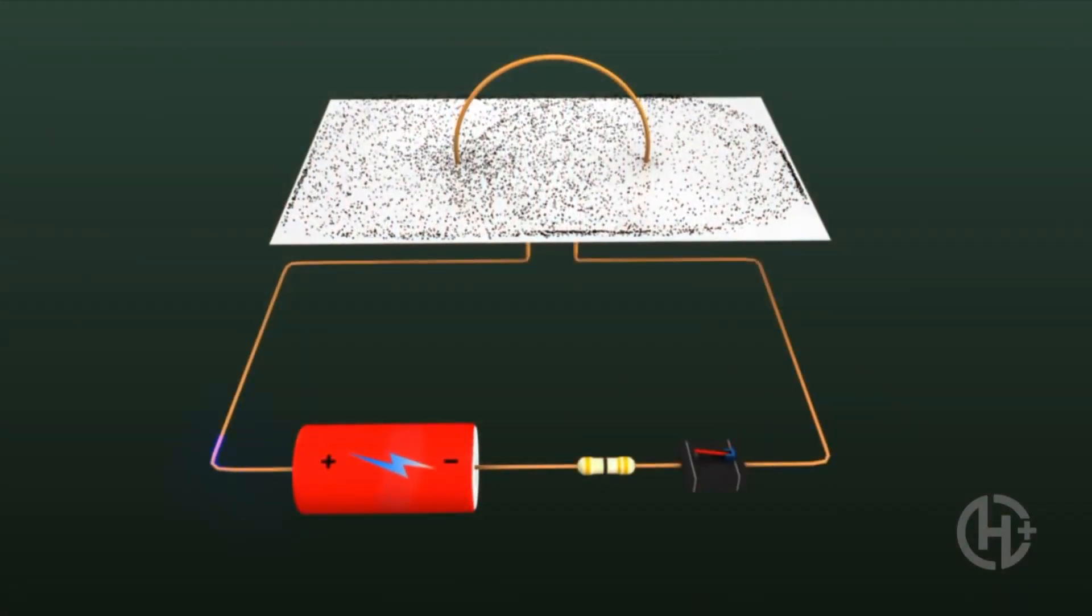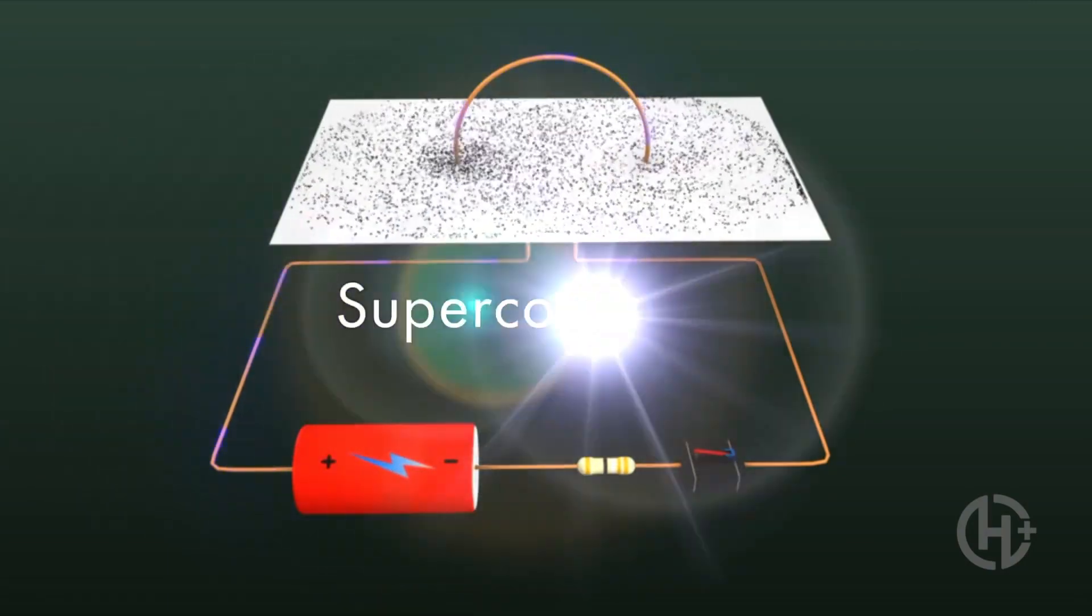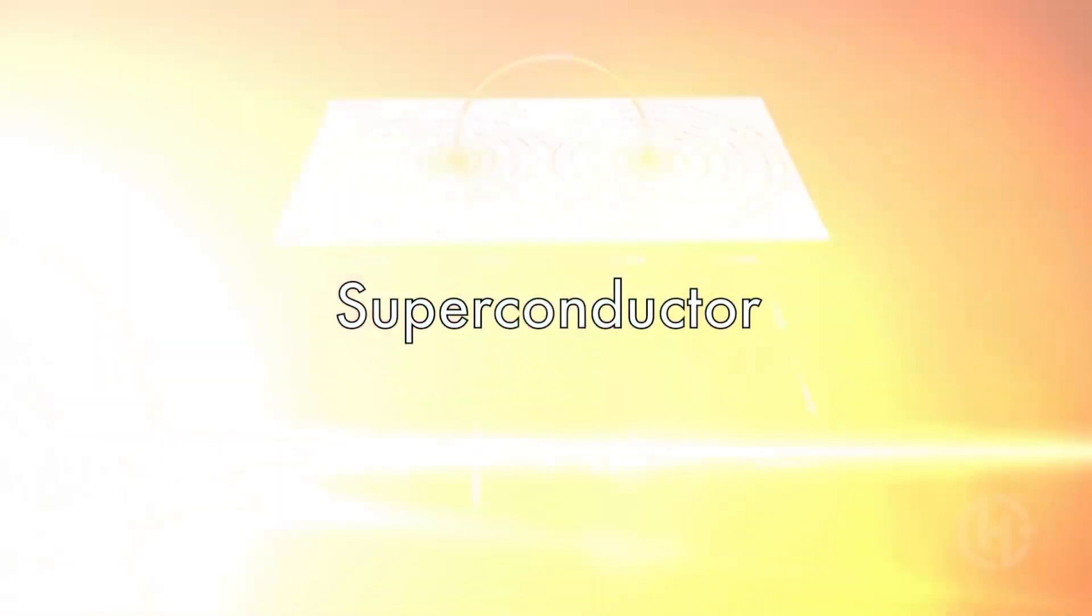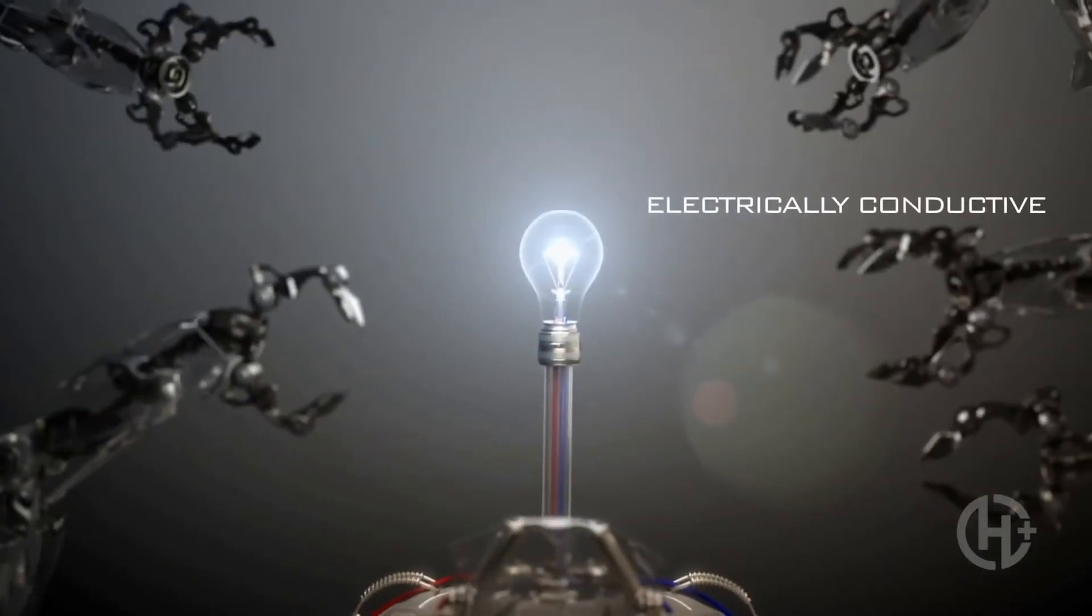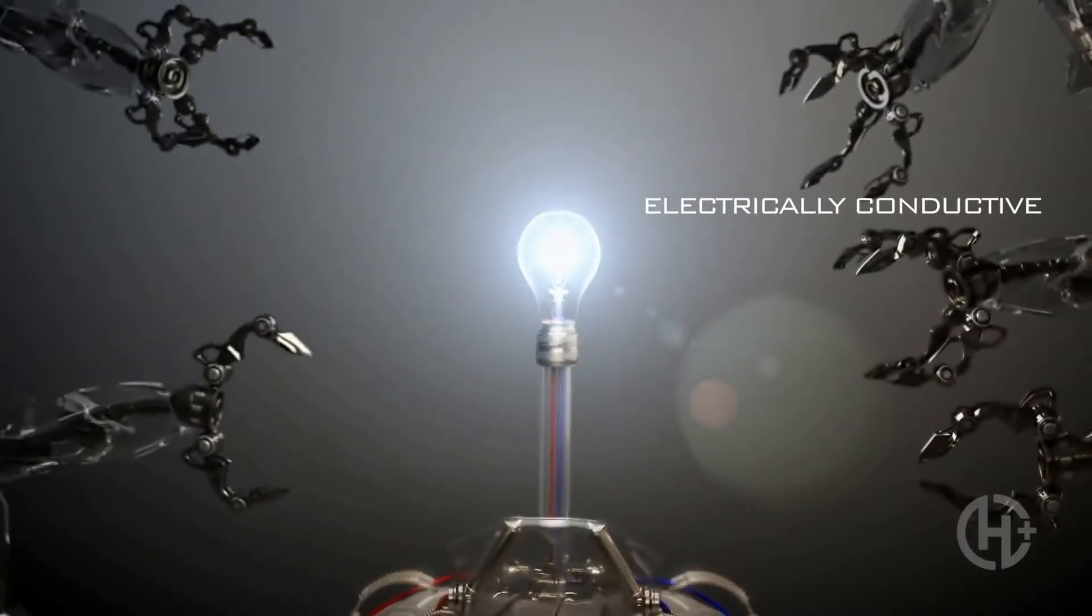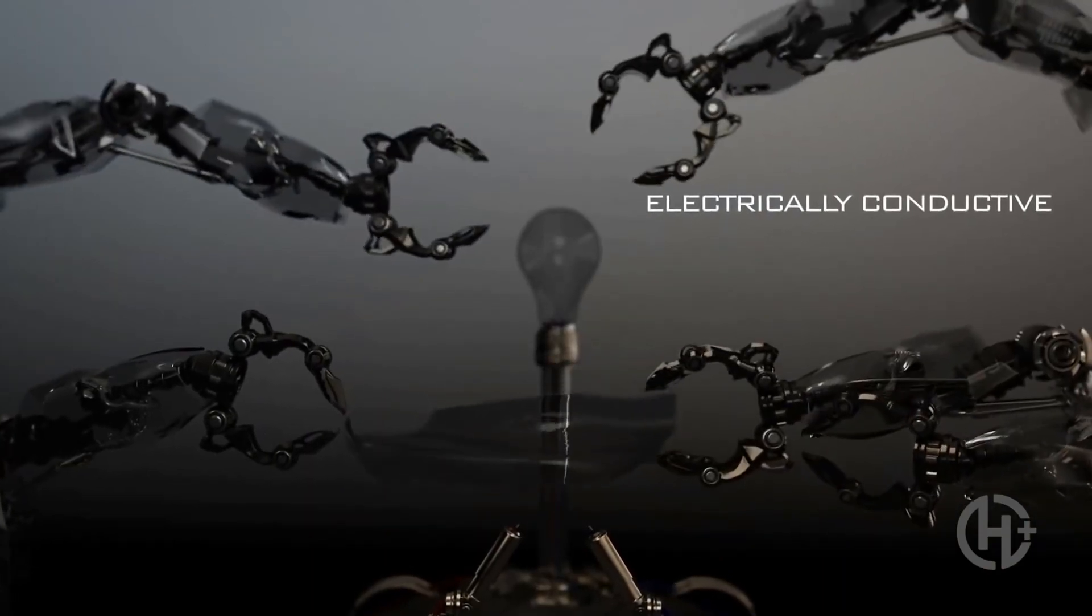However, graphene, a semiconductor in its natural state, can also become what's called a superconductor. By definition, superconductors don't generate heat, meaning they'd conduct flawlessly and have a zero-loss carrying capacity when delivering electricity.